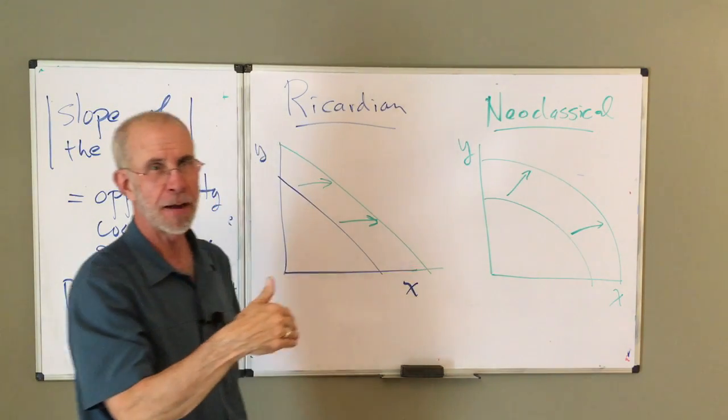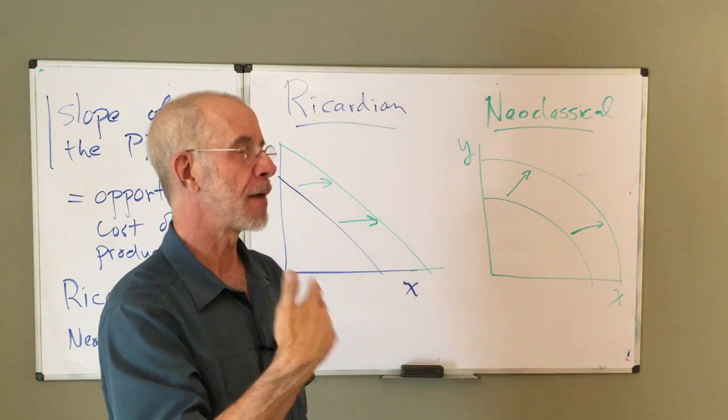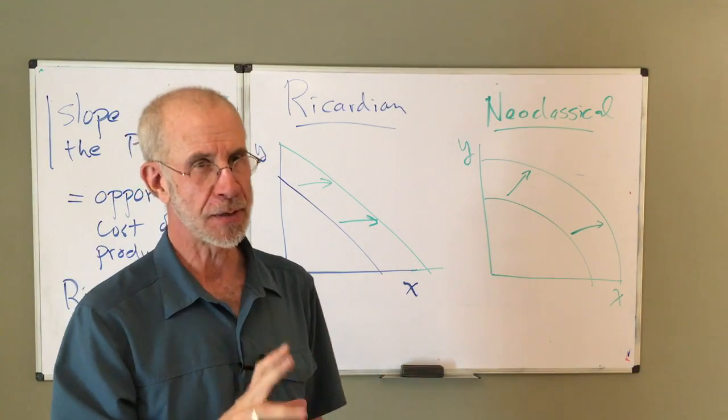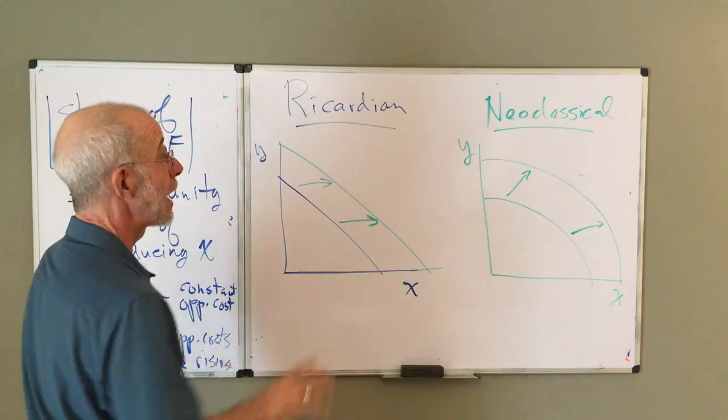The PPF is going to shift out in the same way as the Ricardian model. The slope of the PPF, how that changes, how the opportunity cost changes, really depends on a couple of other things, which I don't want to go into now.